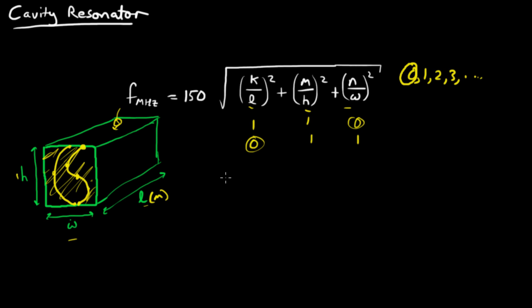Let's consider the case for k equals one, m equals zero, and n equals one. This corresponds to transverse electric mode 101, which you'll sometimes see written for transmission lines or cavity resonators. It applies to all that kind of stuff.